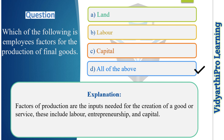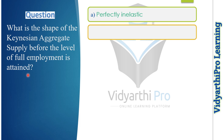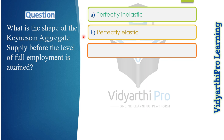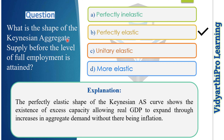Our next question: what is the shape of the Keynesian aggregate supply curve before the level of full employment is attained? In Hindi: 'Poorn rozgar ka star prapt karne se pehle Keynesian aggregate supply ka aakar kya hai?' Options: perfectly inelastic, perfectly elastic, unitary elastic, or more elastic. The correct answer is perfectly elastic. The perfectly elastic shape of the Keynesian AS curve shows the existence of excess capacity, allowing real GDP to expand through increases in aggregate demand without causing inflation.